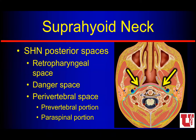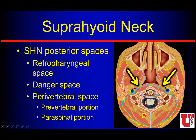Those are the lateral spaces in the suprahyoid neck. We have two big posterior spaces: the retropharyngeal space and the perivertebral space, and in between them is the danger space — usually a potential space with nothing exciting, but it can be very exciting if we have infection that may extend down to the mediastinum, or pathology from the mediastinum that may extend up superiorly. The perivertebral space — that blue deep layer of the deep cervical fascia — goes around the vertebral body, touches the transverse process on both sides, and goes back around the spinous process and musculature.